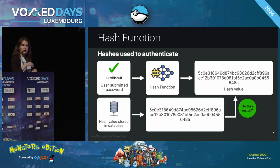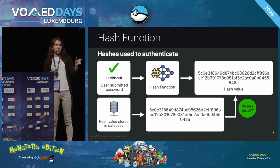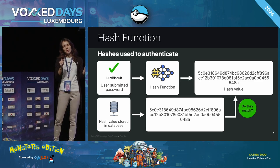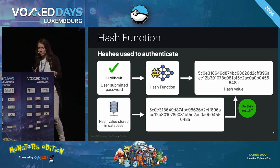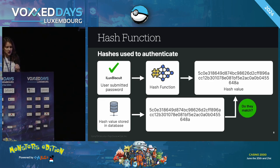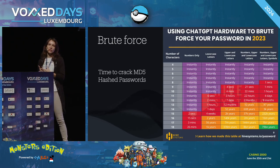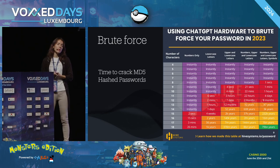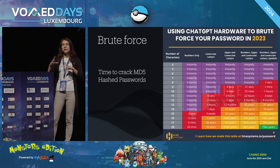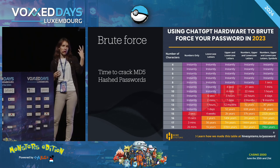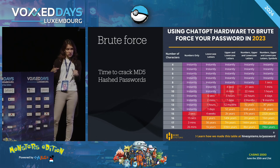When you try to log in, your password is encrypted again and compared with what's stored on the server. But there are many hackers who try to hack passwords. If they find hash values, they can try to determine which algorithm the website uses, or they can create dictionaries — rainbow tables — with already-known hash values.